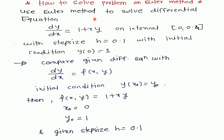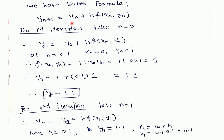See the example: use the Euler method to solve the differential equation dy/dx = 1 + xy on the interval [0, 0.4] with step size h = 0.1 and initial condition y(0) = 1. This means x₀ = 0 and y₀ = 1. We have to solve on this interval at points 0.0, 0.1, 0.2, 0.3, and 0.4. Comparing with the standard form, f(x, y) = 1 + xy, x₀ = 0, y₀ = 1, and h = 0.1.